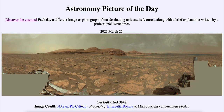A year from now will mark its first decade on Mars exploring the red planet. This image is from day 3048. We don't use Earth days since they're on Mars — we use Martian days. Sol 3048 simply means the 3048th Martian day on the surface. A day on Mars is about a half an hour or so longer than an Earth day.